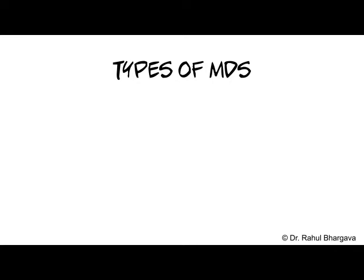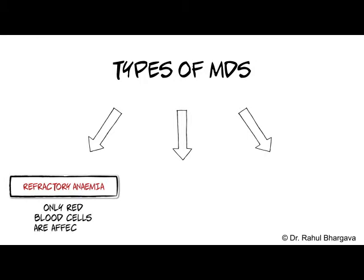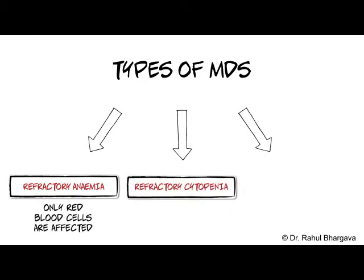Depending on the type of blood cells affected, the main types of MDS are refractory anemia, where just the red blood cells are affected, and refractory cytopenia, where the red blood cells and white blood cells are affected.